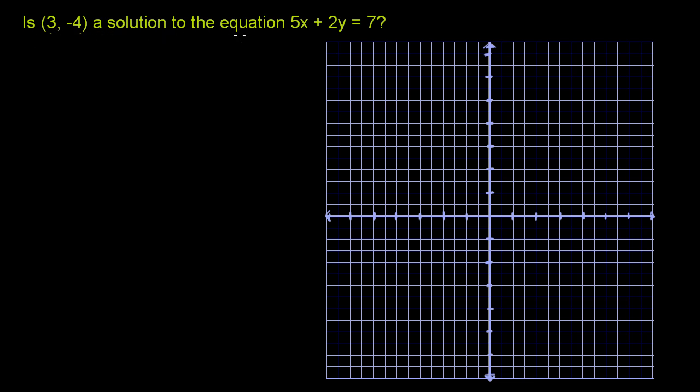Is (3, -4) a solution to the equation 5x + 2y = 7? So they're saying, does x = 3, y = -4 satisfy this equation or this relationship right here?